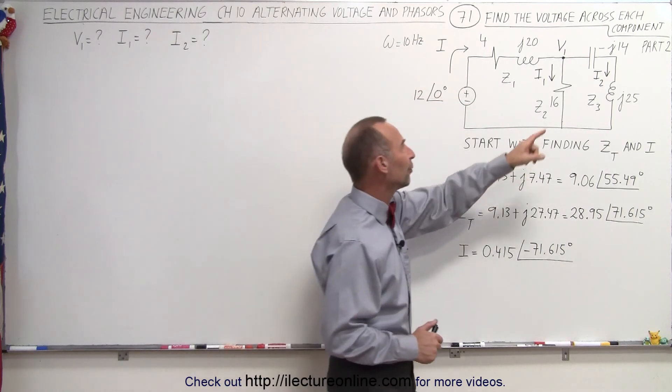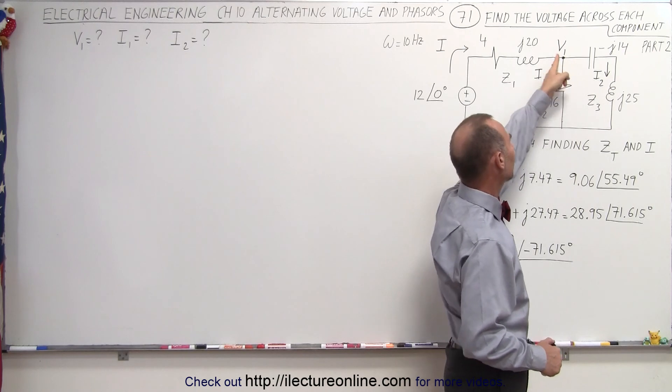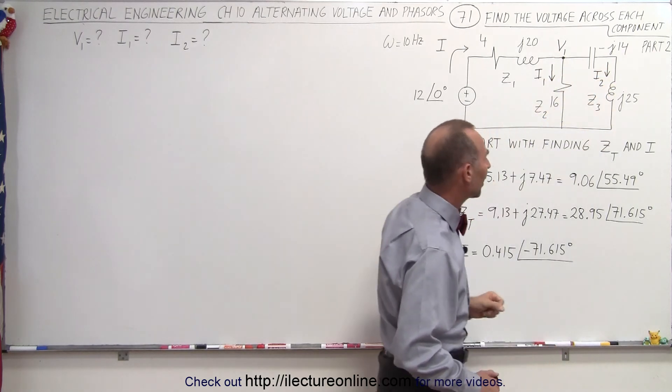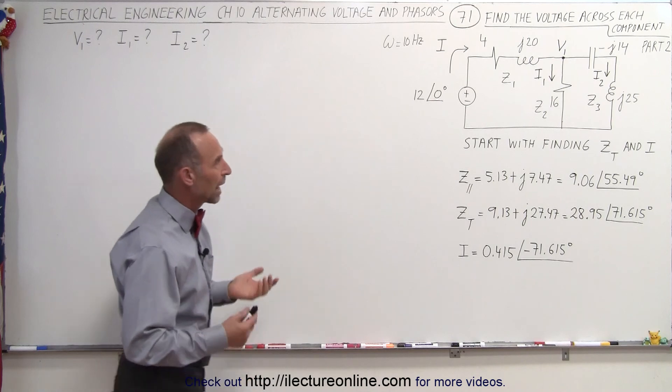what we're going to do now is find the voltage at the branch right here, and find the current through this branch, and the current through that branch, I1 and I2. How do we do that?